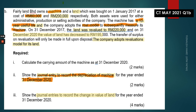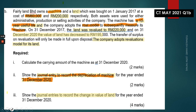Let's look at the question. We have a company called Ferryland, which owns a machine and a land bought on 1st of January 2017. So 1st of January 2017 is the date of acquisition — I'll label this DOA. The initial cost was $60,000 for the machine and $200,000 for the land respectively.